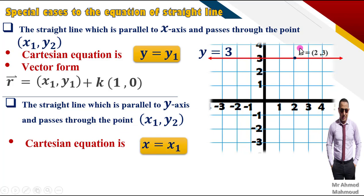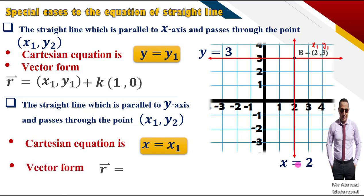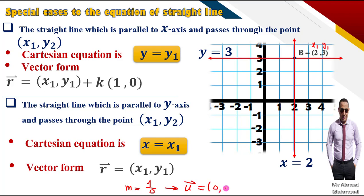يعني فور إكزامبل، لو أنا عندي ستريت لاين باسز روزا بوينت (2, 1) وفي نفس الوقت ده برضو تاني، زي ما قلنا x1, y1، يبقى بتاعت الـ line دي x = 2. الـ direction vector يبقى (0, 1)، ودي الـ special case التانية.